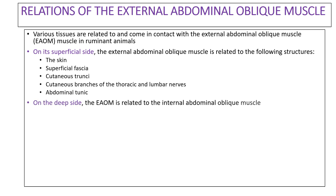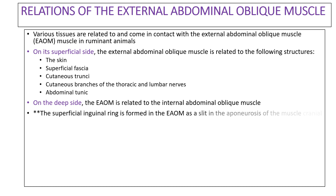On the deep side, the external abdominal oblique muscle is related to the internal abdominal oblique muscle — that is the only structure related to it on the deep side. The superficial inguinal ring is formed within the external abdominal oblique muscle as a slit in the aponeurosis of the muscle, cranial to the pubis.